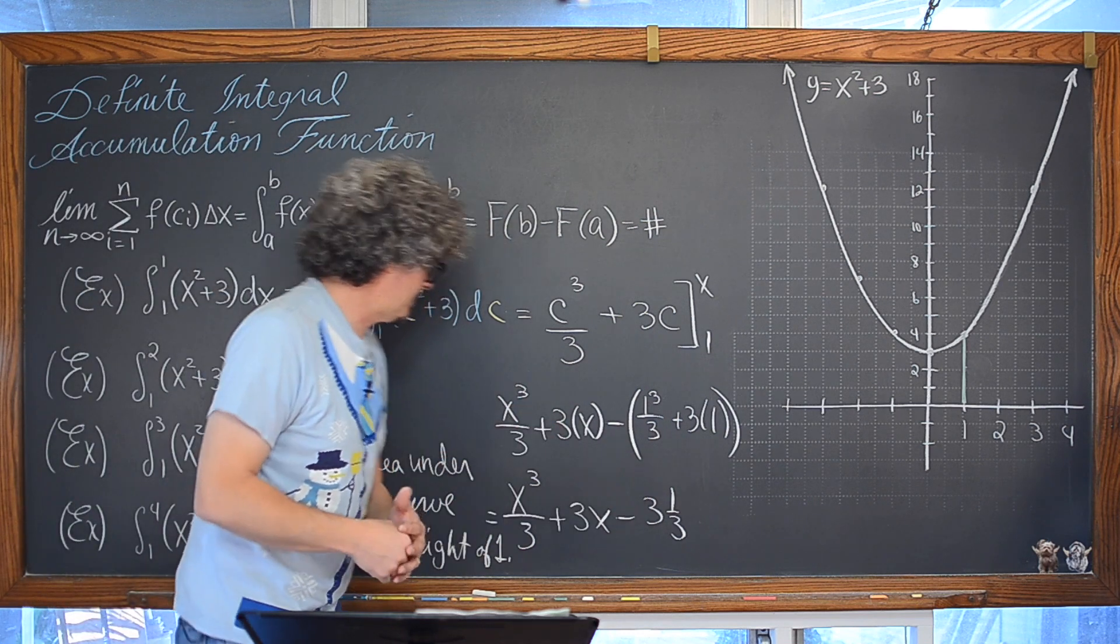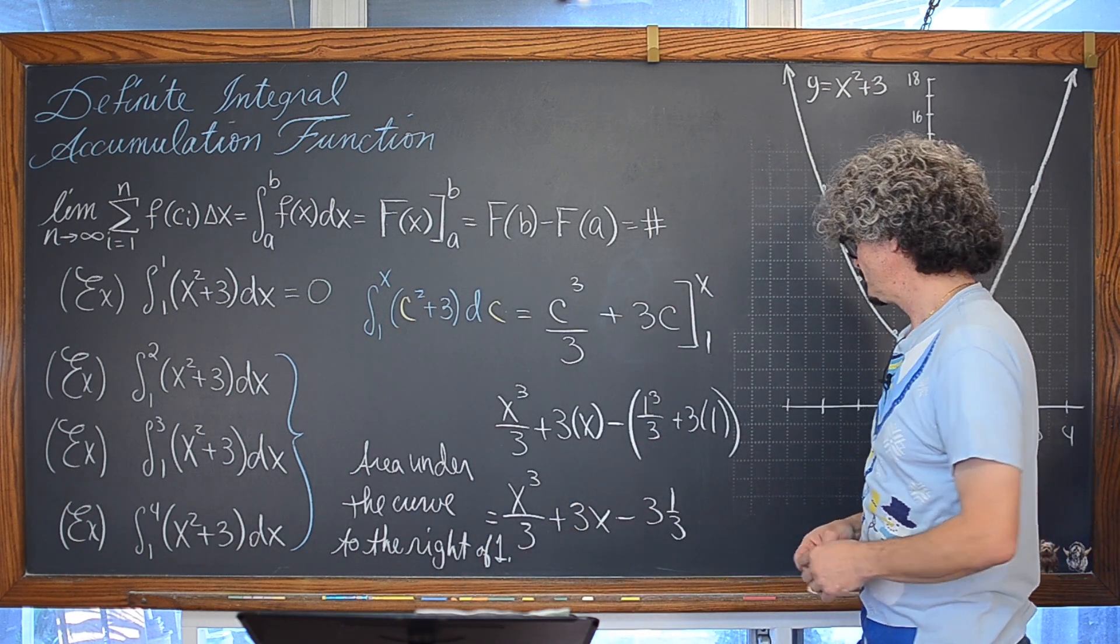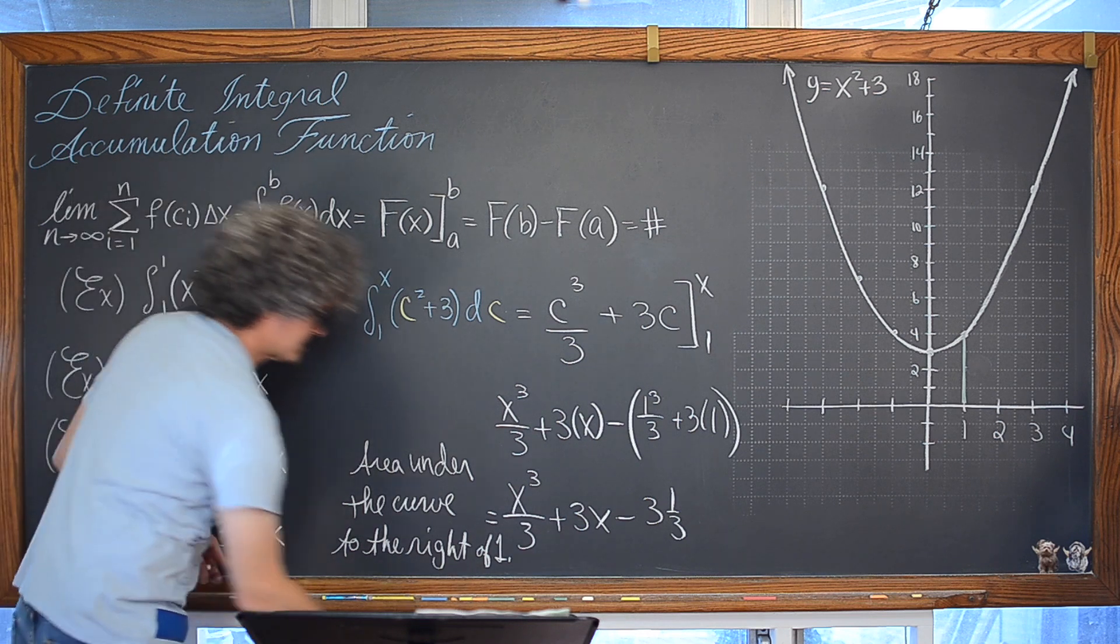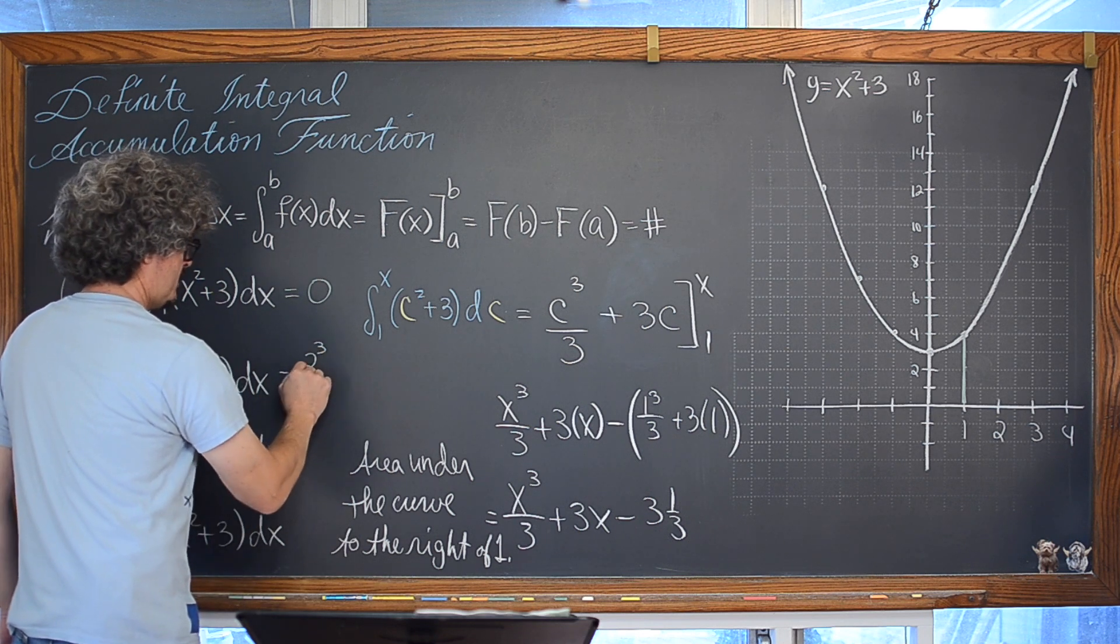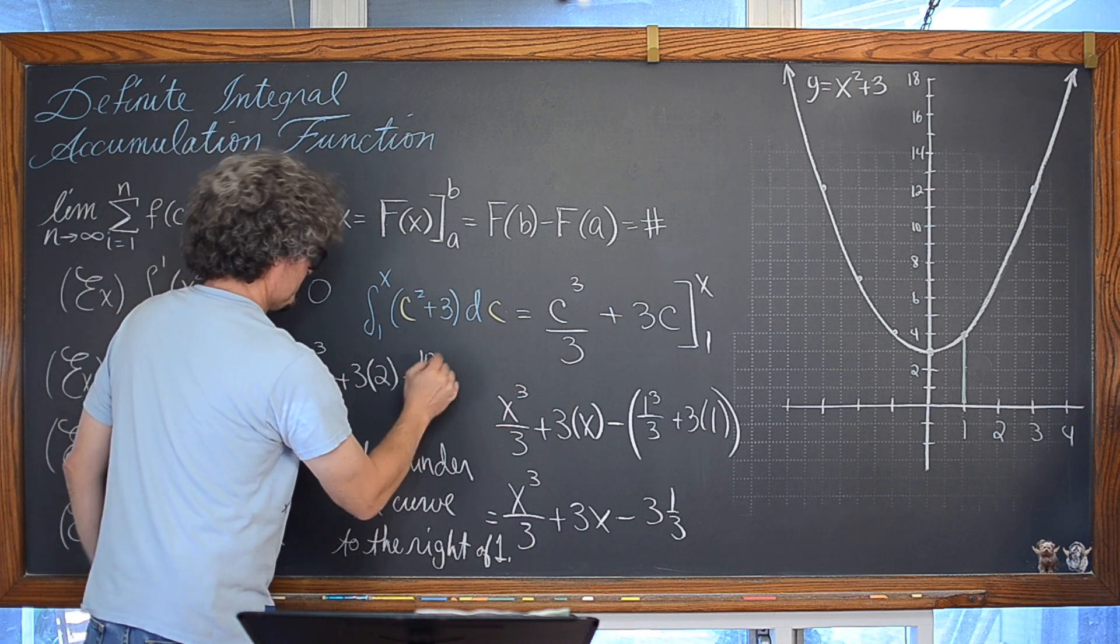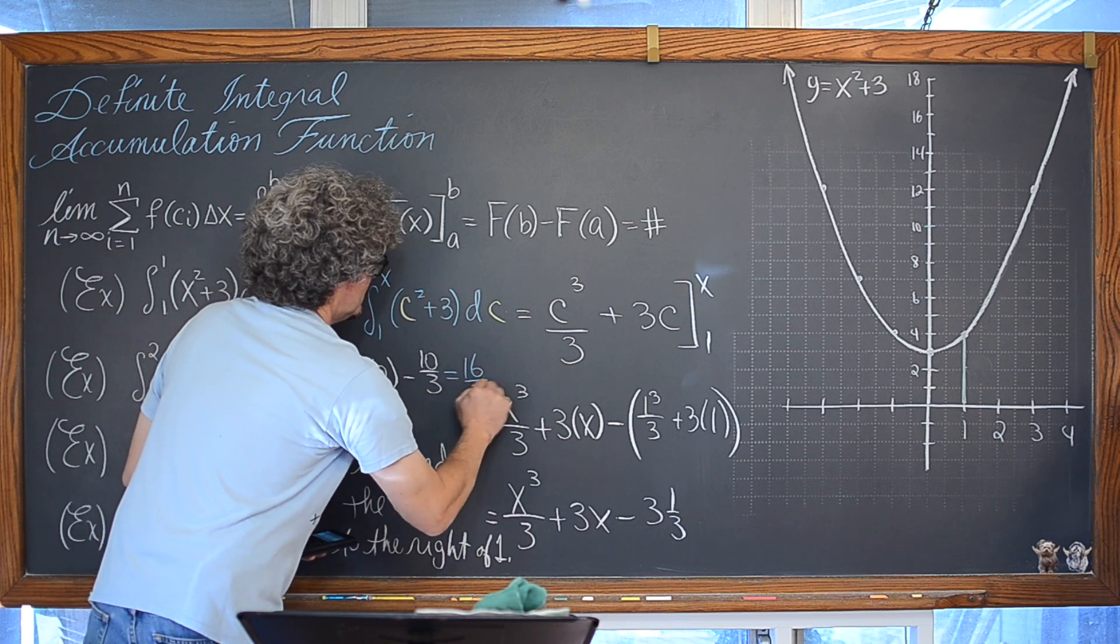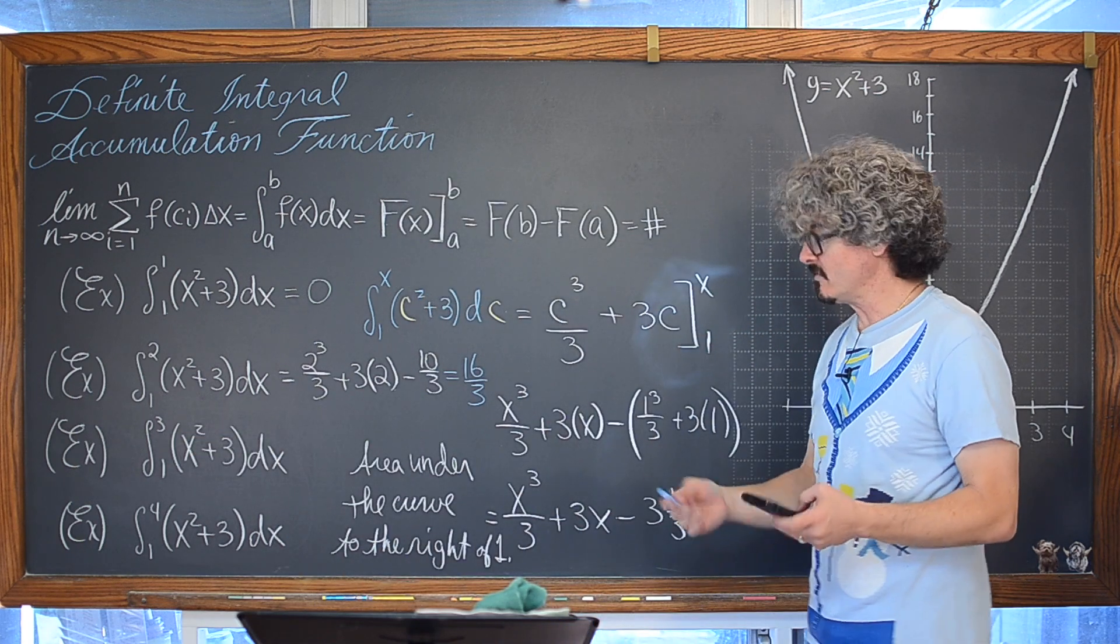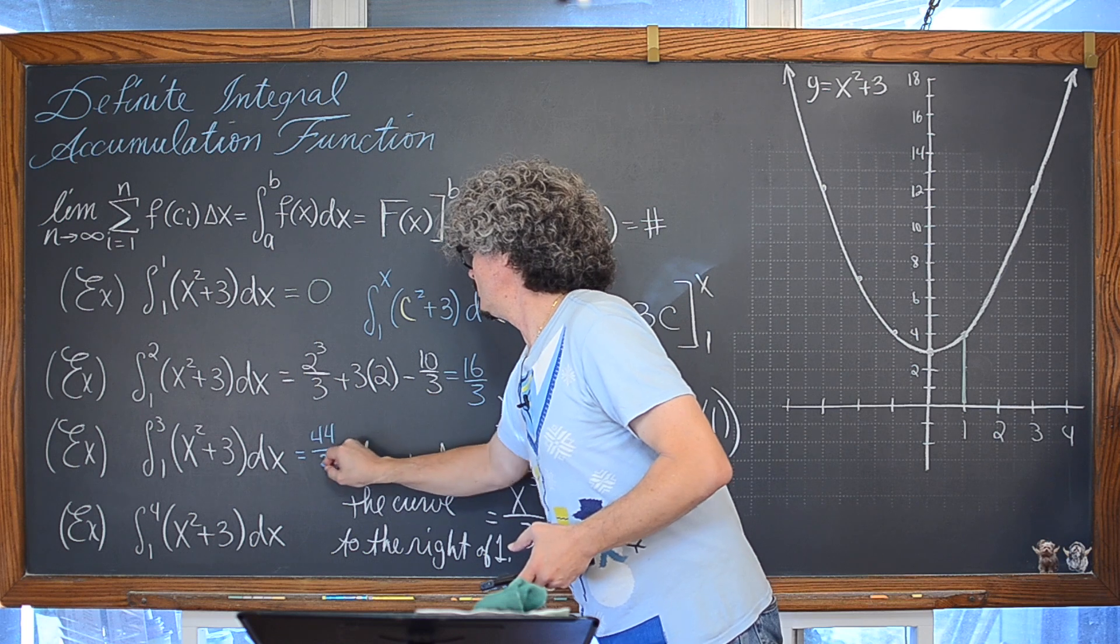We're going to take this value and we're going to be able to plug in the value of 2 and get the answers to these three problems. So, we have 2 cubed over 3 plus 3 times 2 minus 10 third, and I just realized that I don't have a calculator in this room. That's going to be 16 over 3, and now we can just simply take, again, that value of 3, plug it into this equation, or actually go through that process again, and that would give you an answer of 44 over 3.